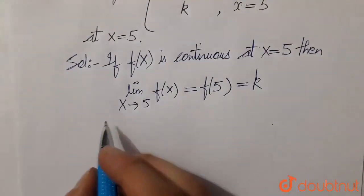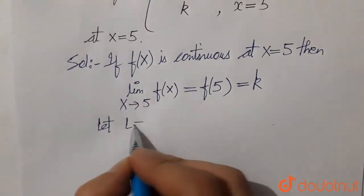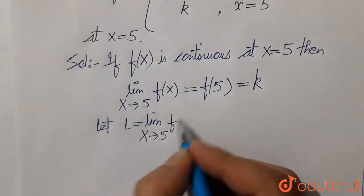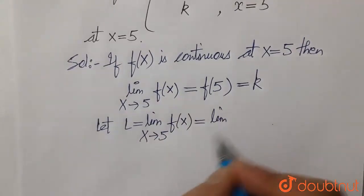So let L equal the limit as x approaches 5 of f(x).